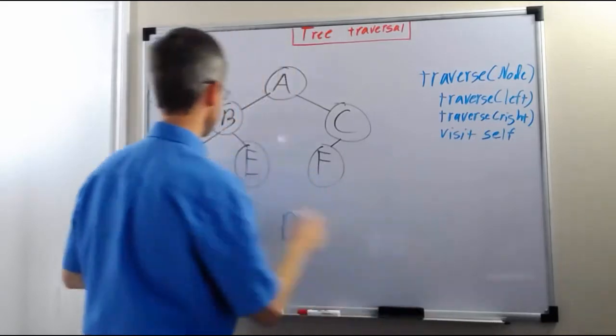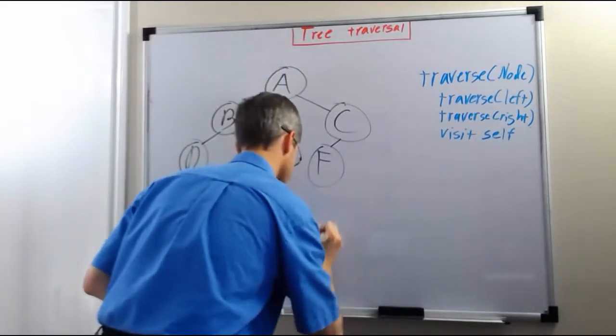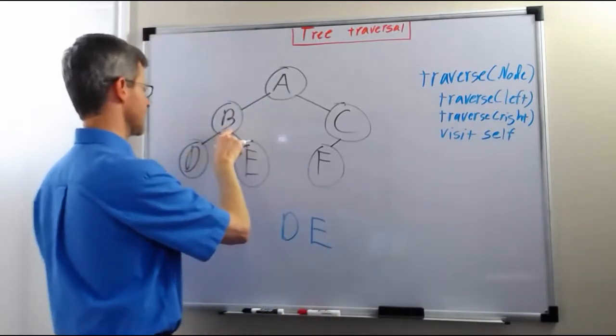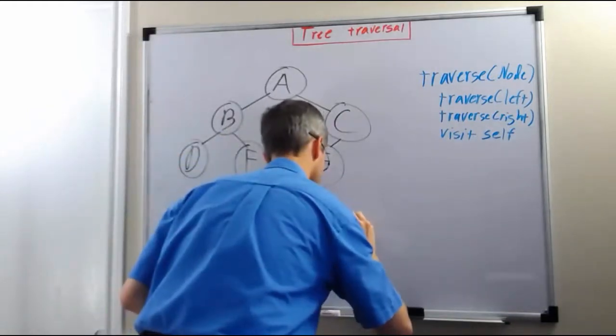Sorry, we go right down to E. From E we can't go left, we can't go right, so all we do is visit E itself. Then we come back up to B. From B we've been left, we've been right, so the only thing remaining is to visit self. So we visit B.